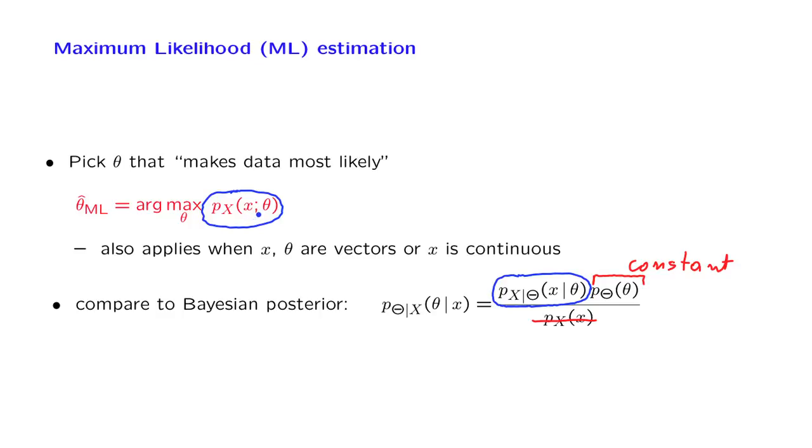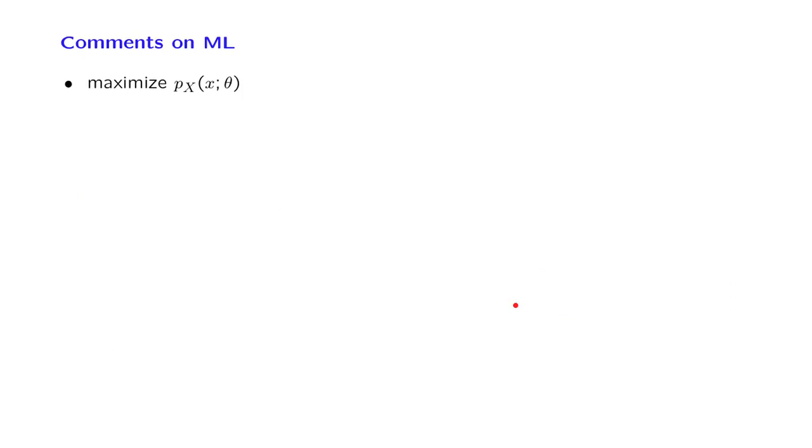So the interpretation of the two methods is quite different, even though the mechanics can be fairly similar. The maximum likelihood method has some remarkable properties that we would like now to discuss. But first, one comment. We need to take the probability of the observed data given theta, this is a function of theta, and maximize it over theta.